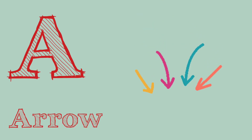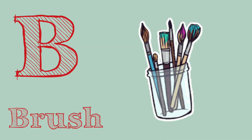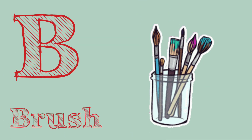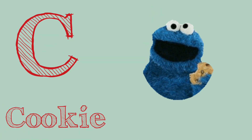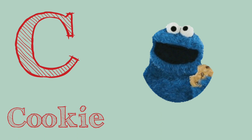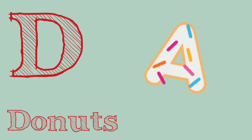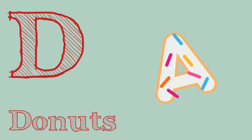A. A is for arrow. B. B is for brush. C. C is for cookie. D. D is for donut.